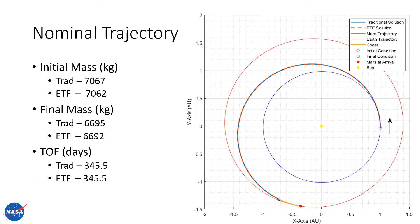We designed two trajectories: one using the traditional deterministic approach with no expected thrust fraction, and one with expected thrust fraction. The traditional solution is shown in blue and the ETF solution in a dashed red line — and they look nearly identical. We're maximizing final delivered mass, and ETF only delivers three kilograms less of final mass, starting with only five kilograms less in initial mass. The times of flight are nearly identical, indicating that ETF-designed trajectories are very close to nominal trajectories, at least in the deterministic case.